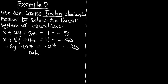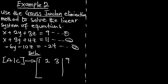First, let's write our matrix and find [A|b]. From equation 1, we are going to have the matrix as 1, 2, 3, equal to 9. Equation 2 gives us 1, 3, 4, equal to 11. And from equation 3, there is no x, so that is 0, negative 6, negative 10, equal to negative 24.